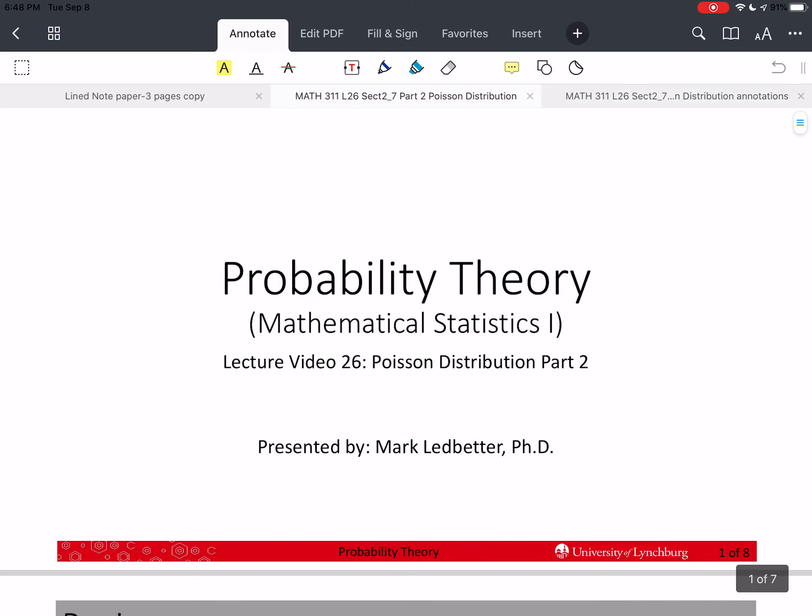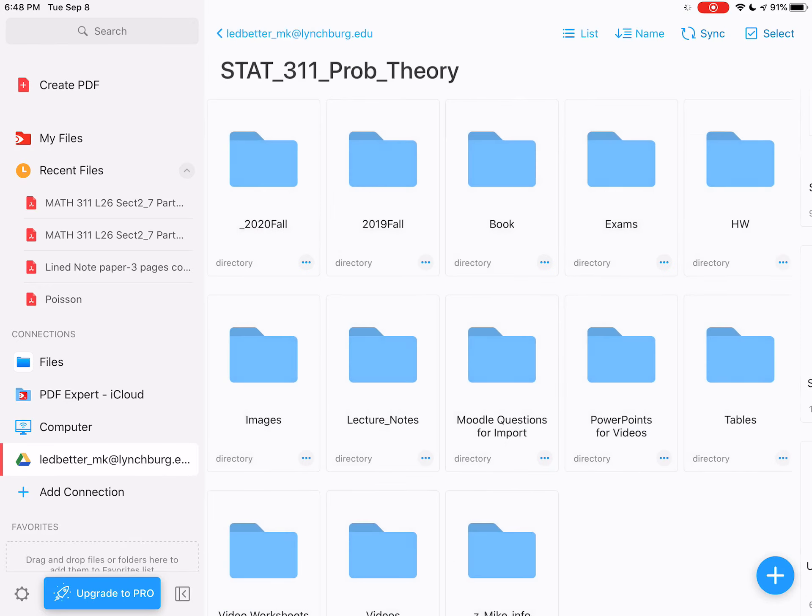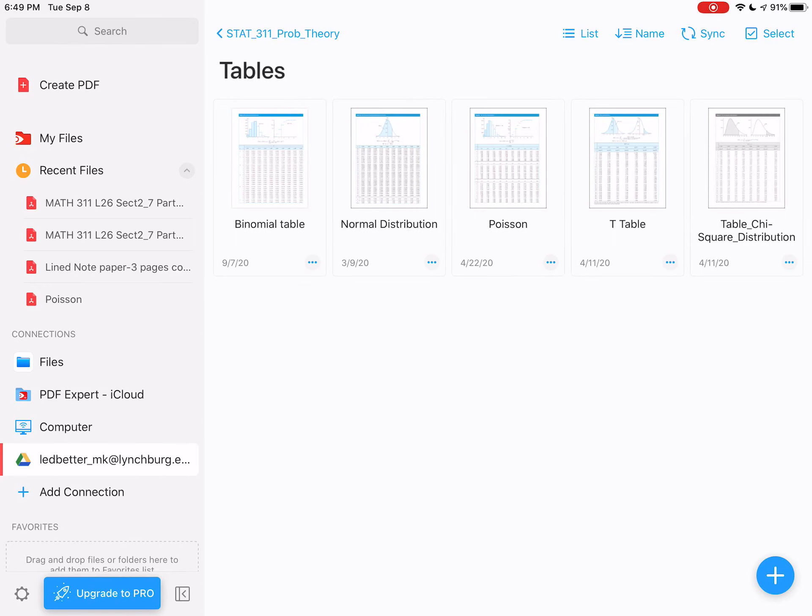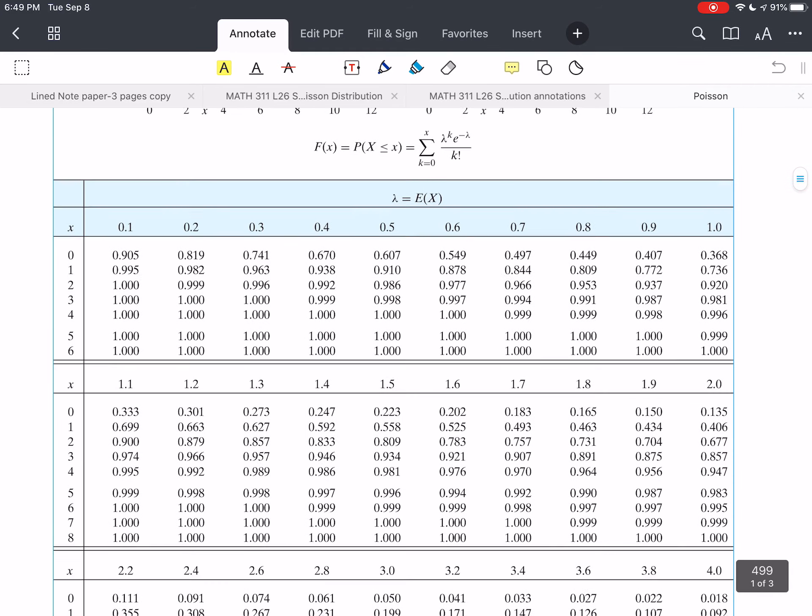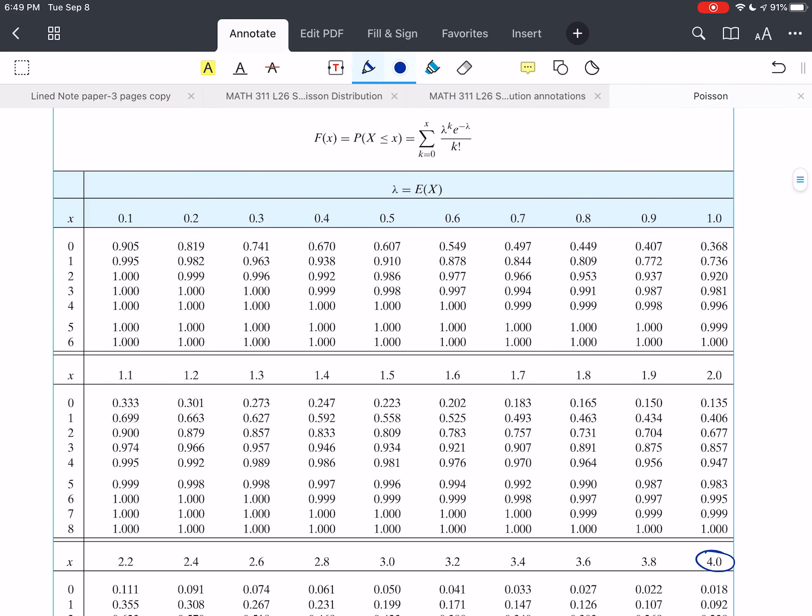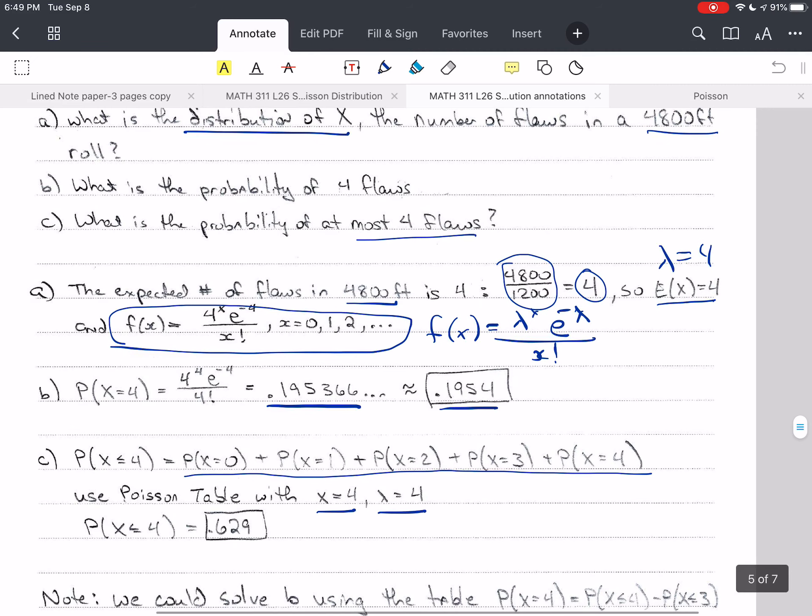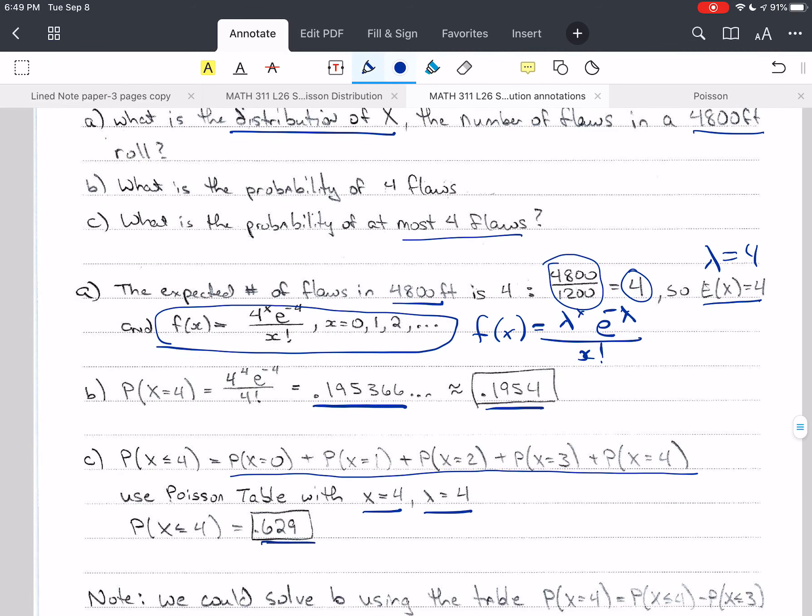So let me go find the Poisson table that I thought I had open. Here it is. And we're going to go to lambda equals 4. And so just how you read this is lambda is over here and X is over down the side. So we have lambda 4 and we have 4. And so we use 0.629 from the table. And so we end up with 0.629 here.